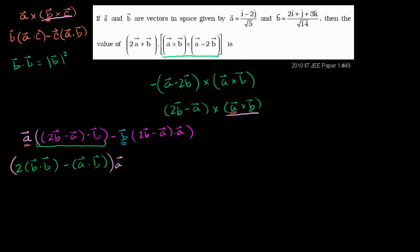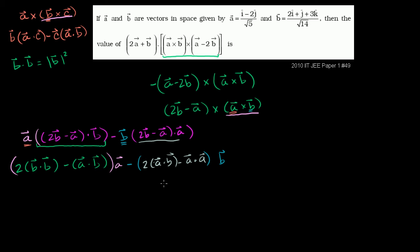So we have: [2(b·b) − (a·b)]·a minus b·[2(a·b) − (a·a)]. Since we know the actual vectors a and b, let's evaluate these dot products. These vectors look like they might be unit vectors, so let's check. a·a = (1/√5)² + (−2/√5)² = 1/5 + 4/5 = 1. b·b = (2/√14)² + (1/√14)² + (3/√14)² = 4/14 + 1/14 + 9/14 = 1.